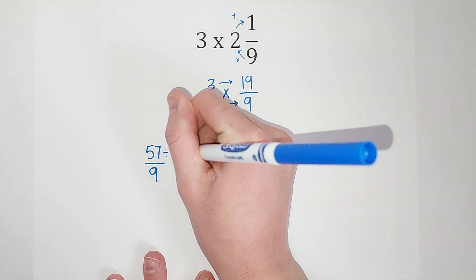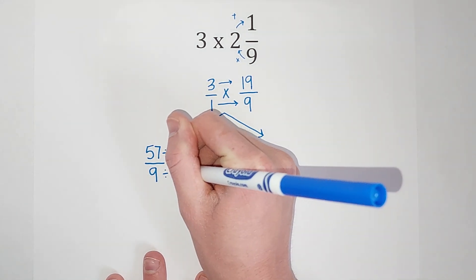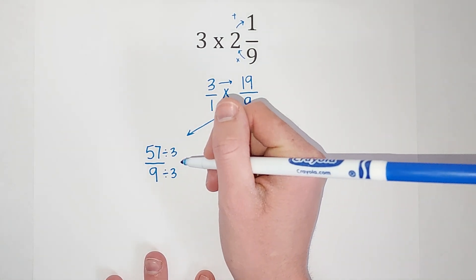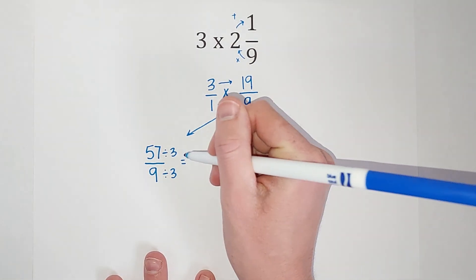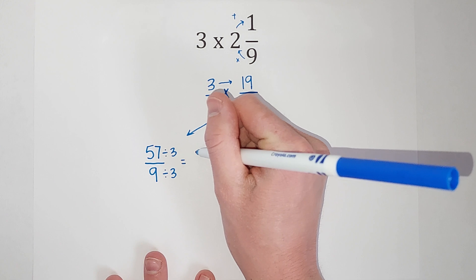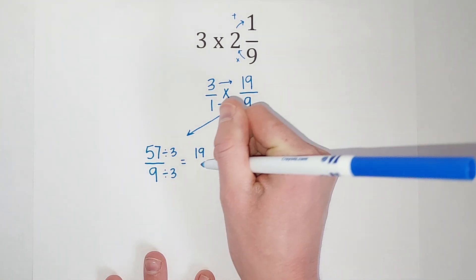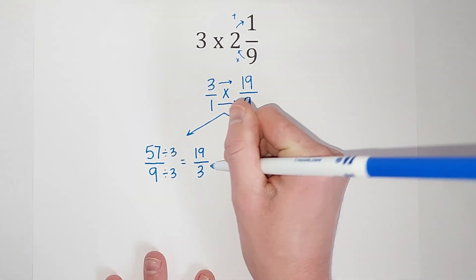So I can divide the 3 out of the top and bottom. If you're not super familiar with simplifying fractions, I'll link a video in the corner. So when I divide 3 out of both of those, I end up with 19 thirds.